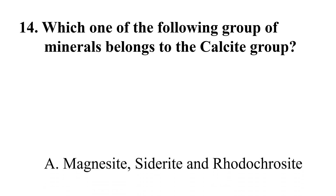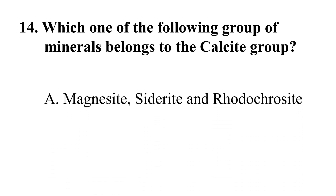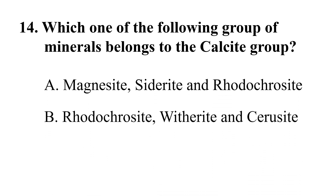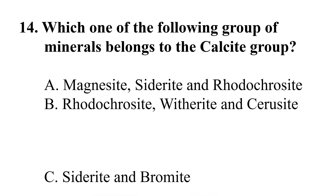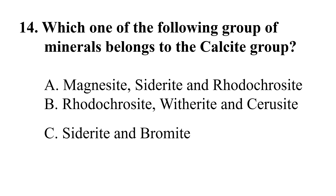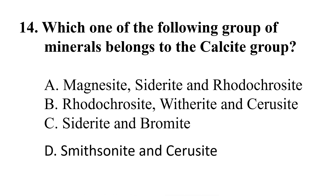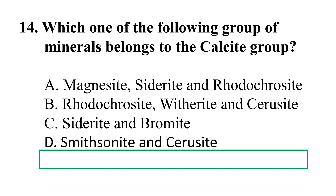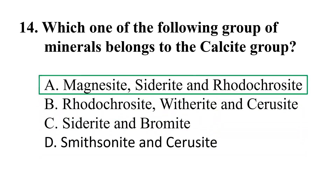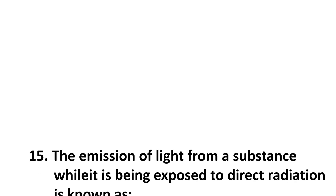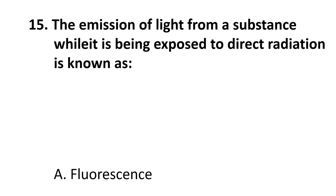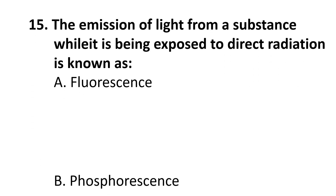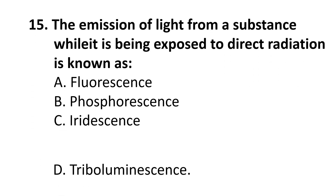Question 14: Which one of the following group of minerals belongs to the calcite group? Choices are: Magnesite, Siderite and Rhodochrosite; Rhodochrosite, Witherite and Siderite; Siderite and Bromide; Smithsonite and Siderite. The correct answer is A) Magnesite, Siderite and Rhodochrosite.